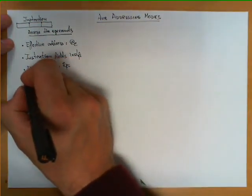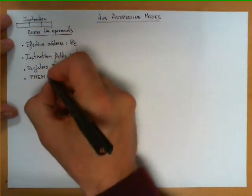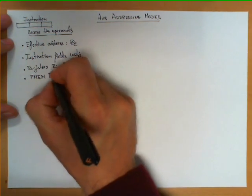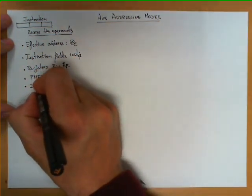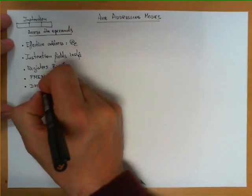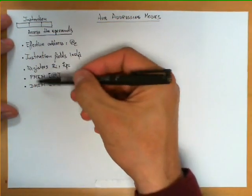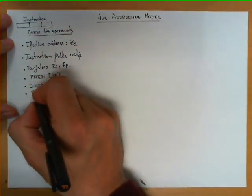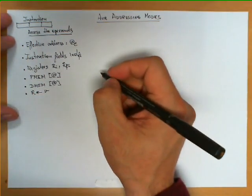For memory access, we're going to distinguish two notations: P_mem for the program memory, providing an address in brackets, or D_mem for accessing the data memory — the two memories in the AVR architecture. Finally, when there is an operation over a register that takes a new value, we'll denote it as R arrow V.